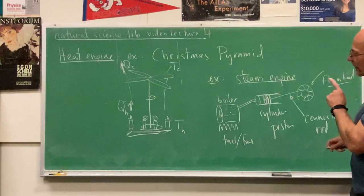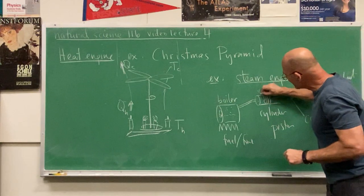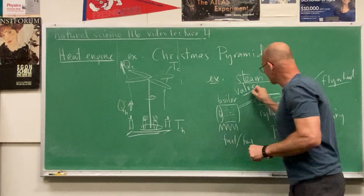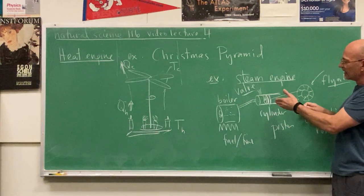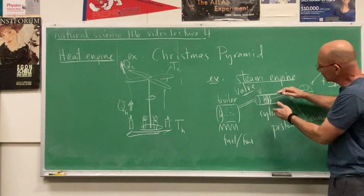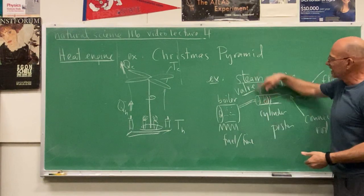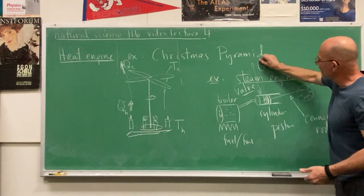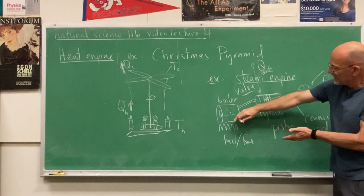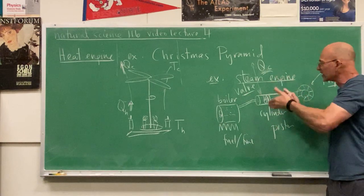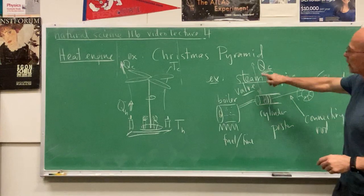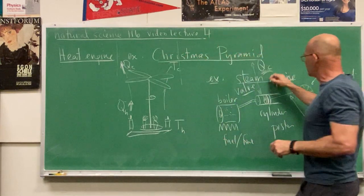Of great importance was the fact that there was a valve, and that valve releases the pressure. On the return stroke it pushes the steam out in the exhaust direction — that's where QC comes from again. We have high-temperature thermal energy coming in here and some lower-temperature thermal energy going out the valve. So those were our two examples: the Christmas pyramid and the steam engine.